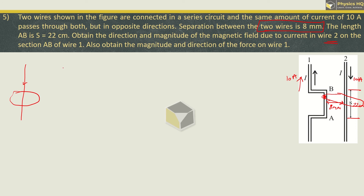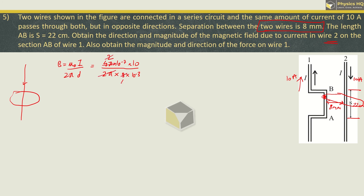We will use the formula B = μ₀I / (2πr). μ₀ = 4π × 10⁻⁷, current = 10 ampere, divided by 2π × distance = 8 × 10⁻³ meter. This gives us the magnetic field which acts on wire segment AB.